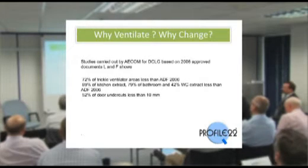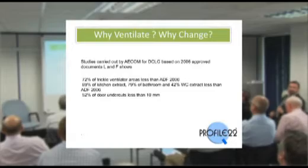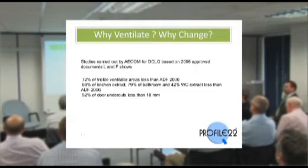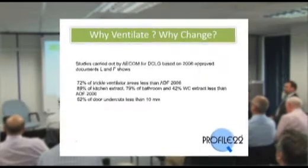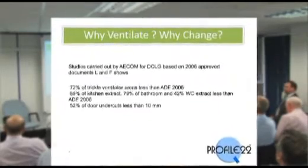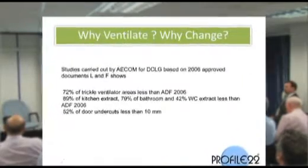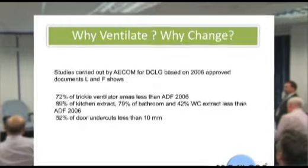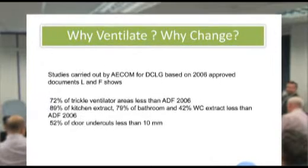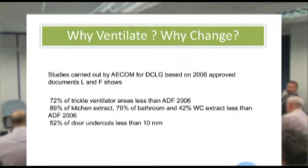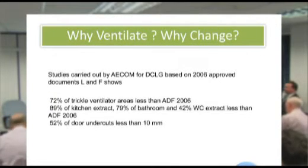A study carried out by ACOM, which are the people that write the building regulations for the government, found out that 72% of the trickle vent areas based on the 2006 regulations were actually under ventilated.